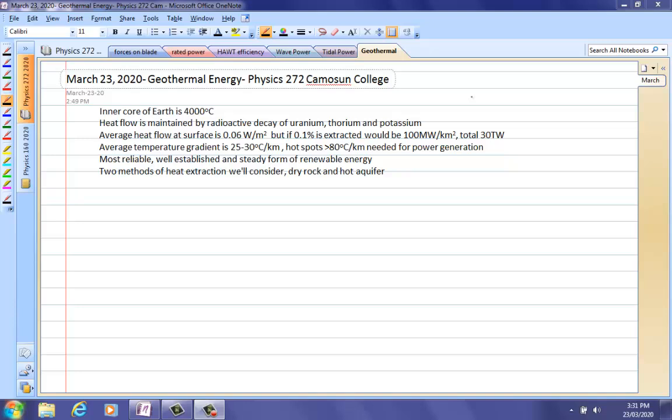It's very reliable. It doesn't turn on and off like wind and sun. It's well established and we're going to look at two methods of heat extraction. Basically what you do is you drill down until you're at a really high temperature, then you pump water down there, let the water get hot, and bring the hot water up, which you extract its heat to generate steam to turn turbines to generate electricity. There's two things: you can have dry rock, which sometimes they have to frack to open up spaces within the rock so when you pump water down the water has somewhere to go, or if you're in an area where you already have hot water sitting down there, you simply have to drill down to release that hot water.